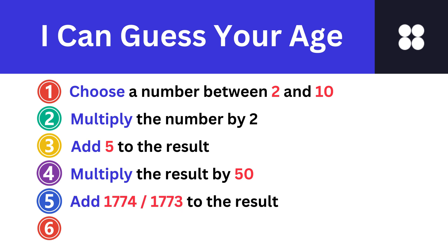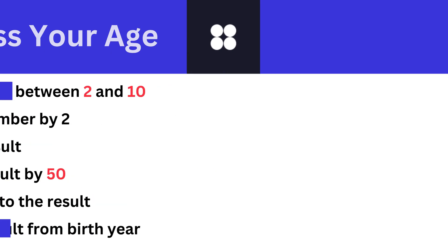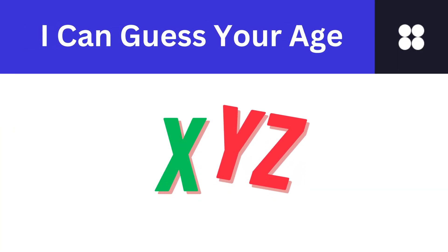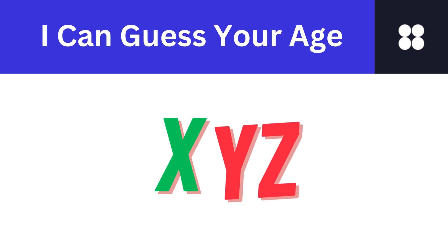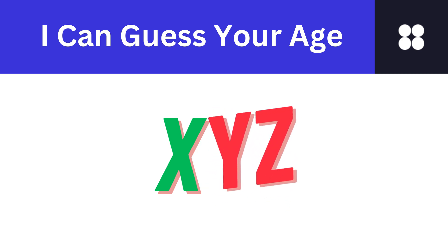Step 5: If you had already celebrated your birthday in 2024, then add 1,774 to the prior result. If your birthday is coming up in 2024, then add 1,773 to the prior result. Step 6: Subtract the year that you were born from the prior result. You should get a three-digit number. The first digit is the number you chose initially and the last two digits are your age.